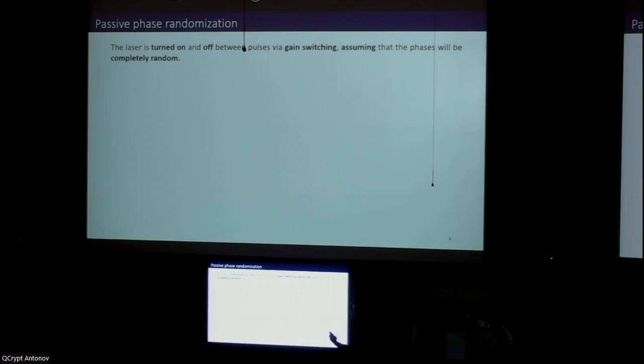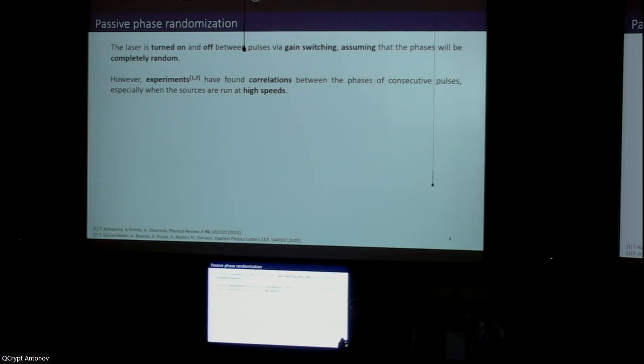Passive phase randomization basically consists of turning the laser on and off in between pulses with the assumption that this will completely empty the cavity of the laser, and therefore each new pulse will gain a completely random phase. However, experiments have shown that this is not so simple because they have actually found correlations between the phases of consecutive pulses, particularly when sources run at high speeds. This is believed to be the main imperfection that passive randomization systems suffer from.